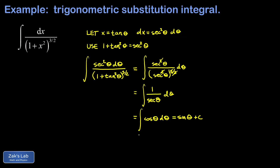We're not done yet because the original variable was x. So we have to go back to our original substitution — we said x equals tangent of theta, which means theta is the inverse tangent of x, in other words, the angle whose tangent is x. So our answer is the sine of the angle whose tangent is x, plus C.